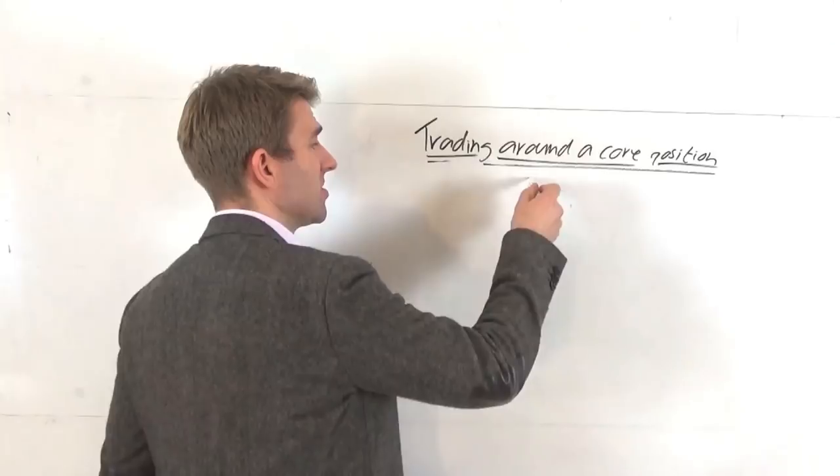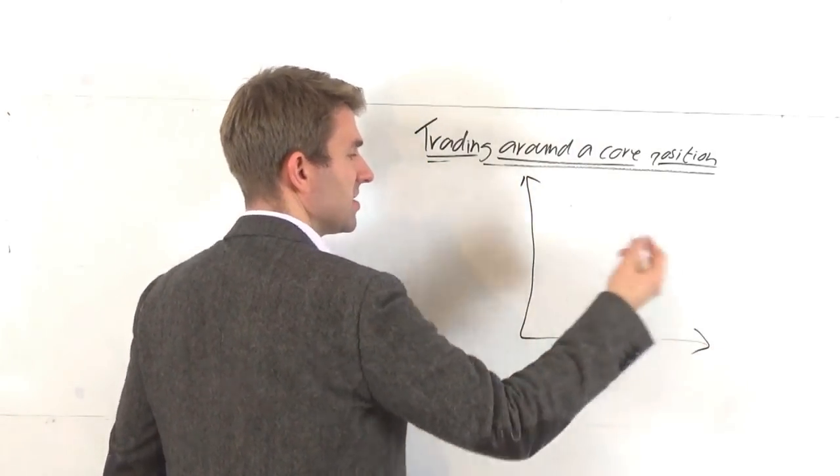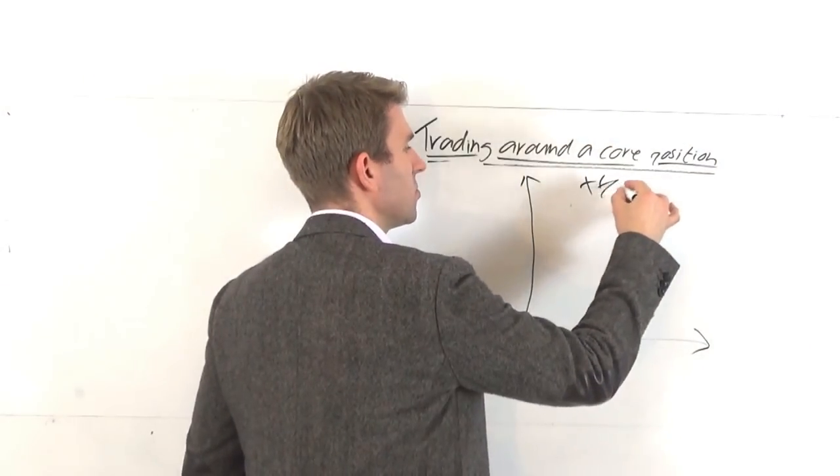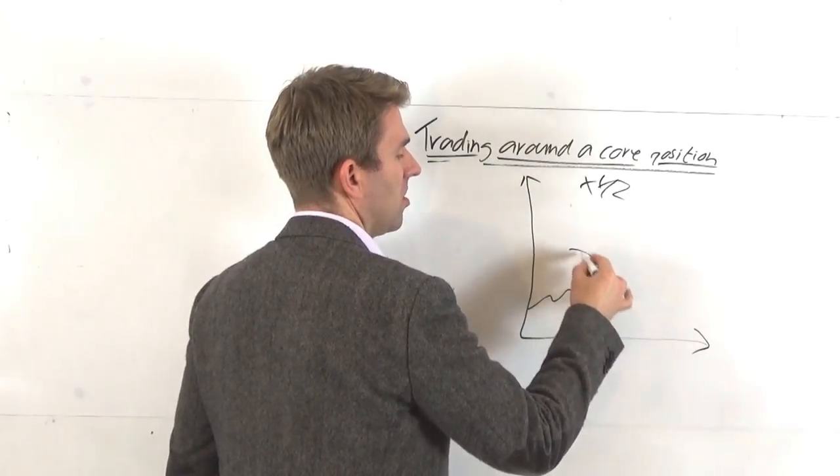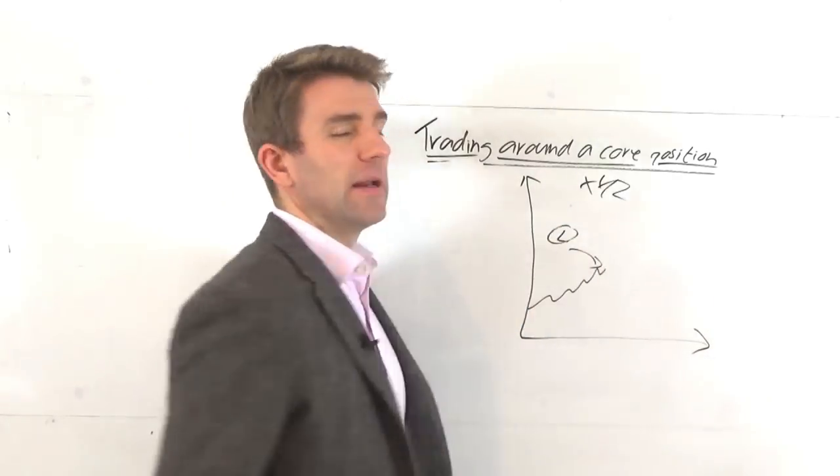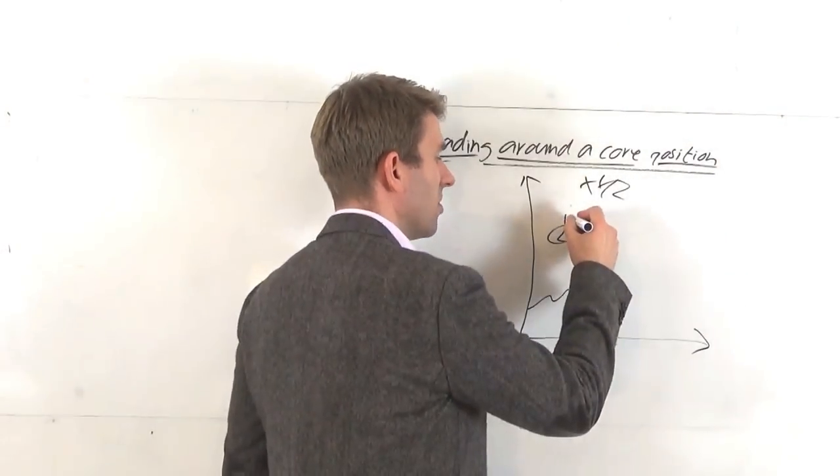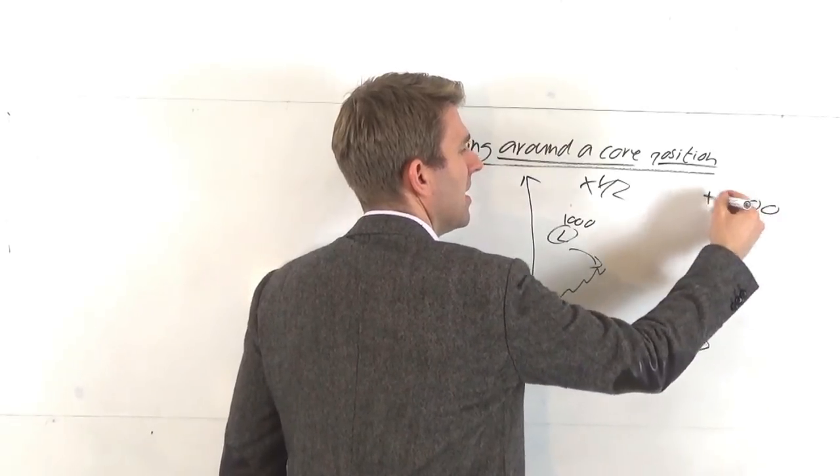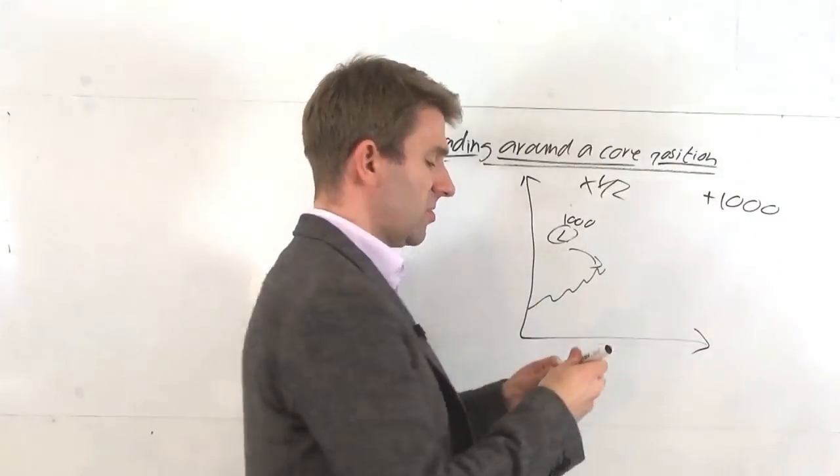Trading around a core position is pretty much as it says. You've got your chart here, you've got your position. Let's say you think that this market is going up, so let's say XYZ stock or XYZ market. It's chugged along and you decide to go long here. You might buy a thousand shares, let's use a thousand for argument's sake. So you've gone long a thousand shares.